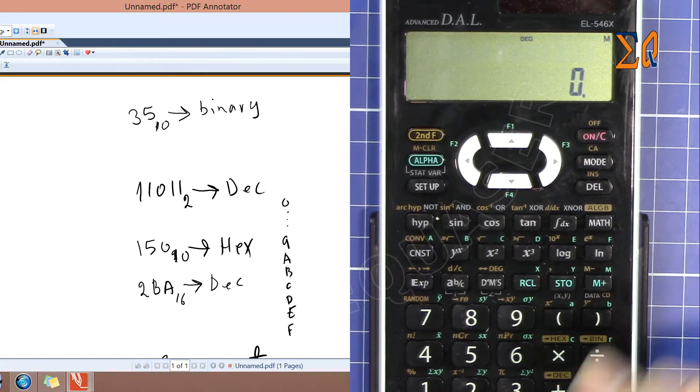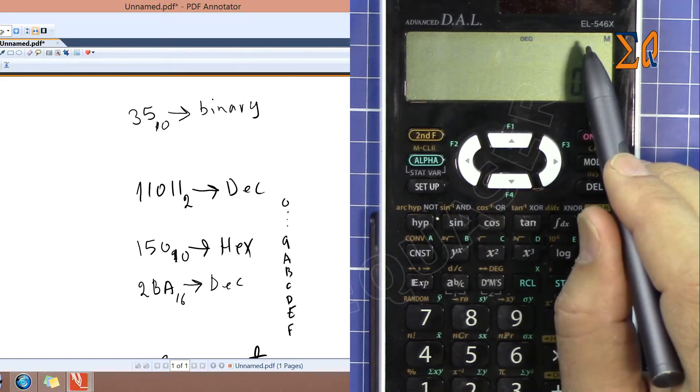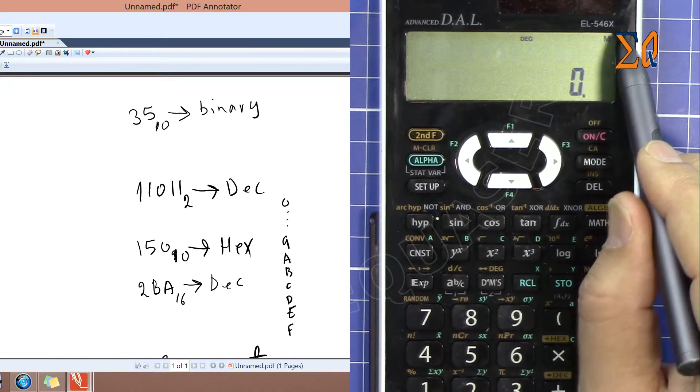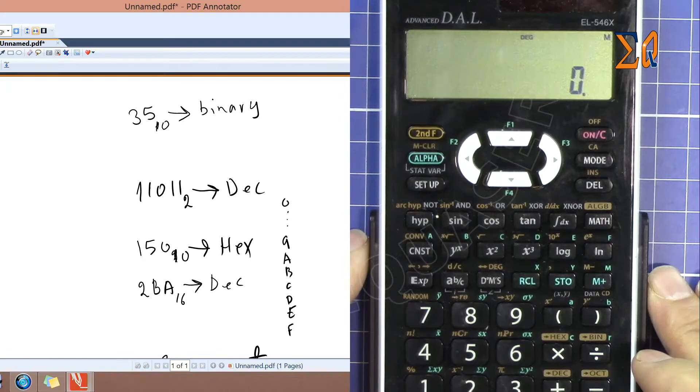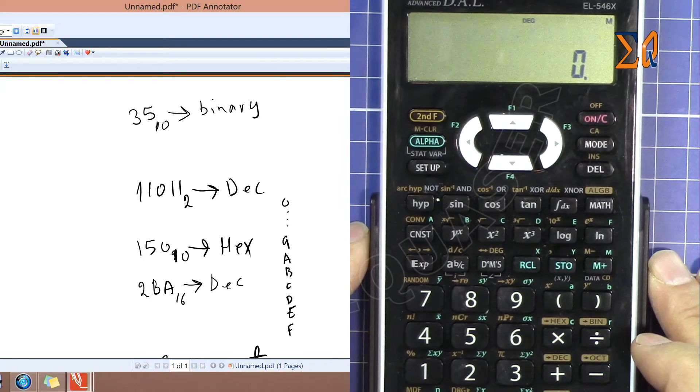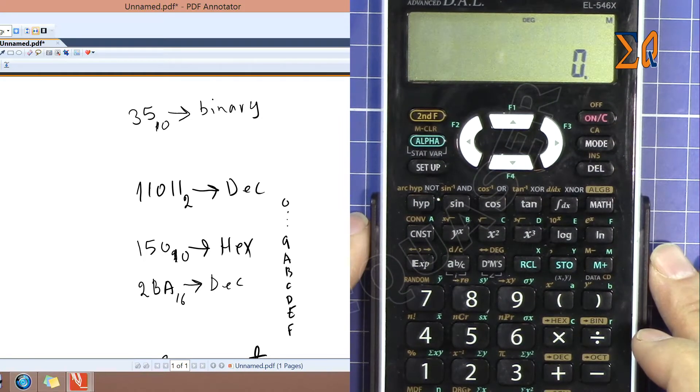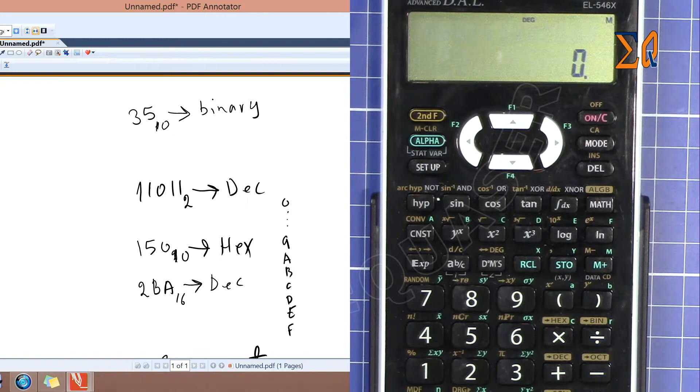Hi, welcome to Equazor. In this video we are going to use SHARP EL-546X and EL-506X calculator to convert between binary, decimal, and hexadecimal. So let's get started. Now this is 35 base 10, which is decimal, and we want to convert it to binary.